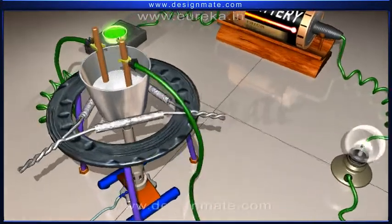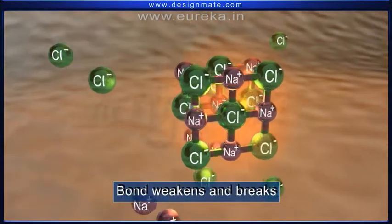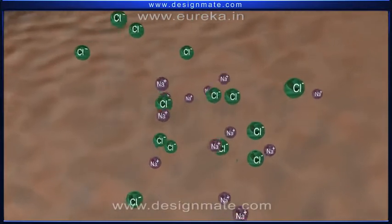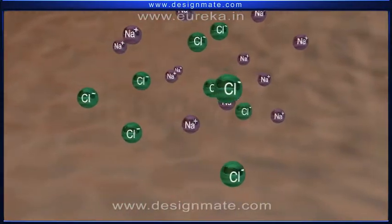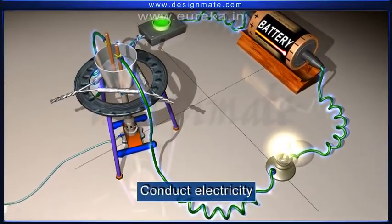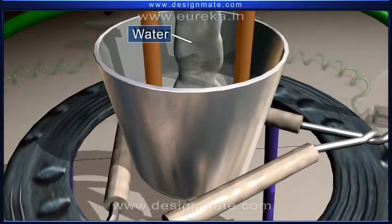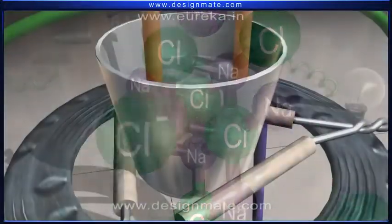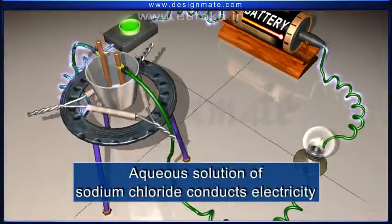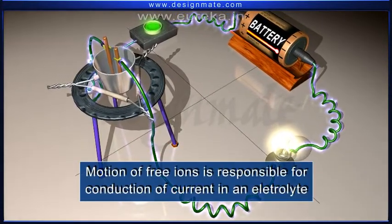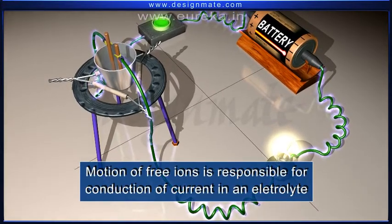When the same sodium chloride is heated, the bond between sodium and chloride ions weakens and breaks. The ions become mobile and are able to conduct electricity. Dissolving sodium chloride in water also produces free ions. Hence, an aqueous solution of sodium chloride also conducts electricity. Thus, the motion of free ions is responsible for conduction of current in an electrolyte.